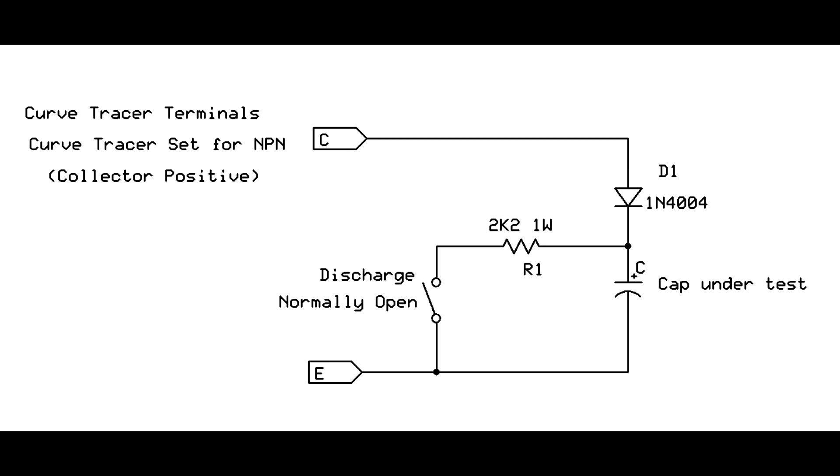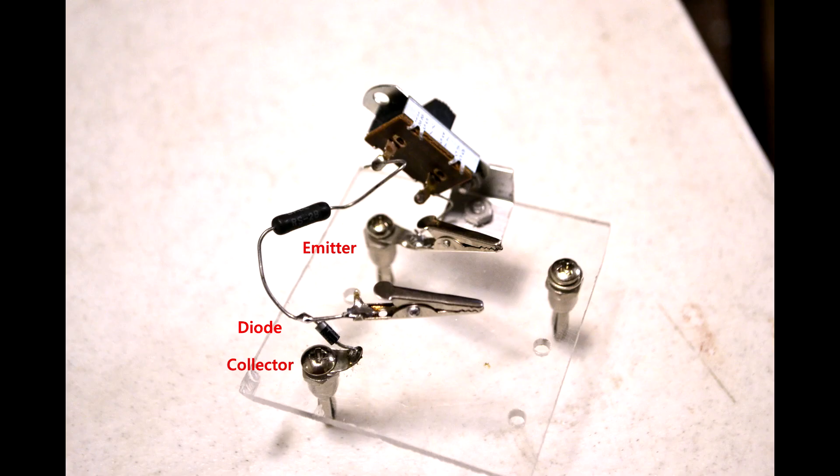A capacitor connected directly will be discharged by the output impedance of the collector sweep when the sweep is reduced, but the diode isolates the capacitor from the sweep, leaving it charged, potentially with a lethal voltage on it.